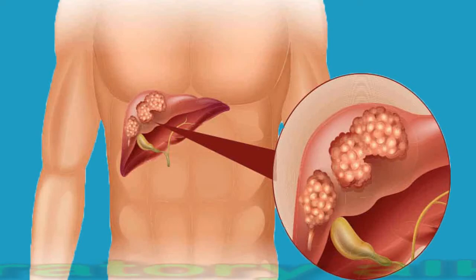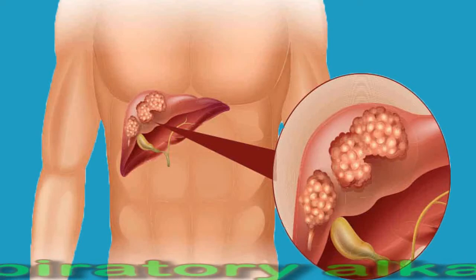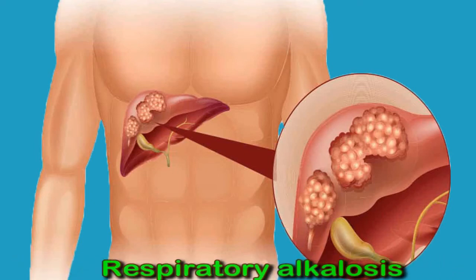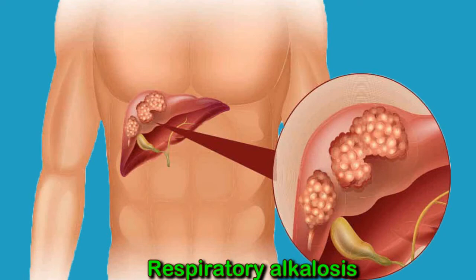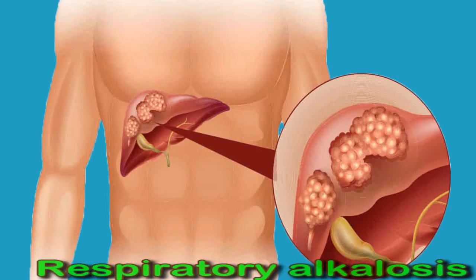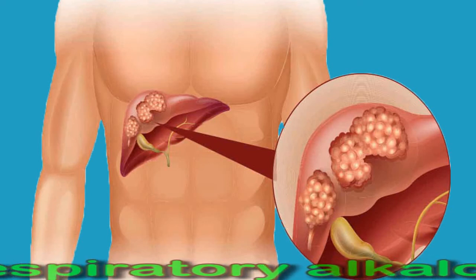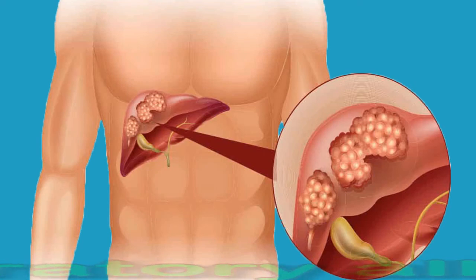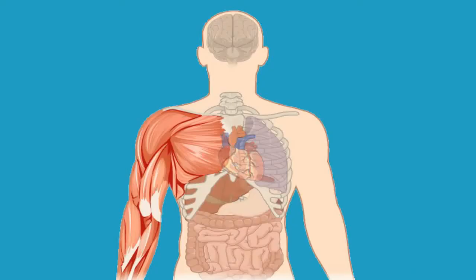Respiratory alkalosis often occurs due to situations or conditions that make people breathe quicker or deeper than usual. These include shock, fear or panic, high temperature, serious infection, some lung conditions such as pneumonia, pulmonary embolism, liver failure, and aspirin overdose, as the body overcompensates for the high acid levels.